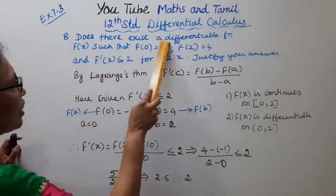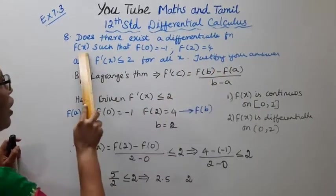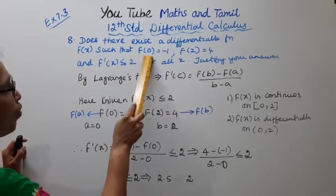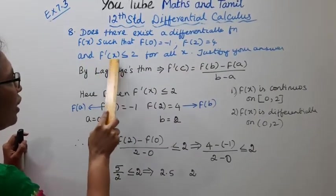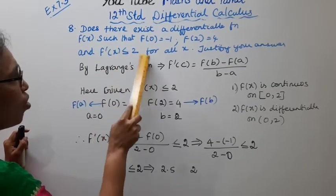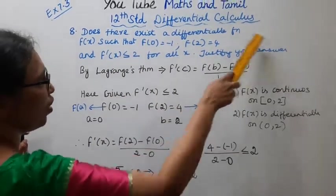Does there exist a differentiable function f(x) such that f(0) = -1, f(2) = 4, and f'(x) ≤ 2 for all x? Justify your answer.